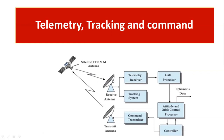The data processing is handled by the data processor. The tracking system is used to track how the satellite is operating around the Earth — whether it is in the correct position or deviating. That data is analyzed and given to the attitude control and orbit control processor. Whatever instructions we need to give the satellite are sent through the transmit antenna by the command transmitter, which uplinks the signal instructions and commands to the satellite.